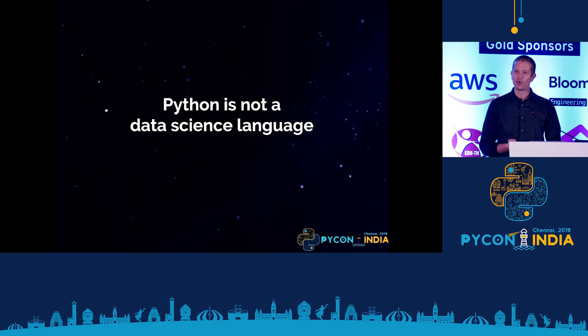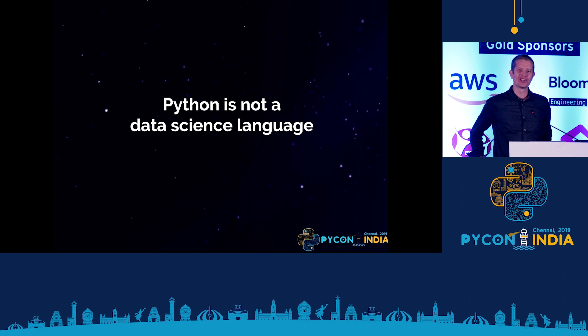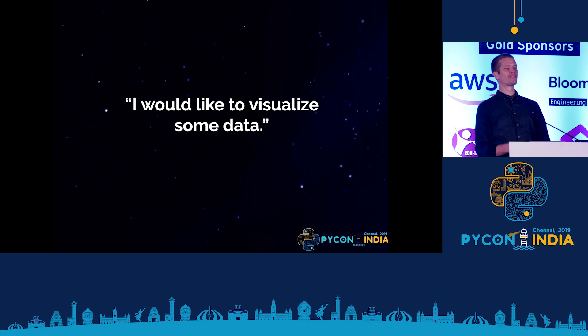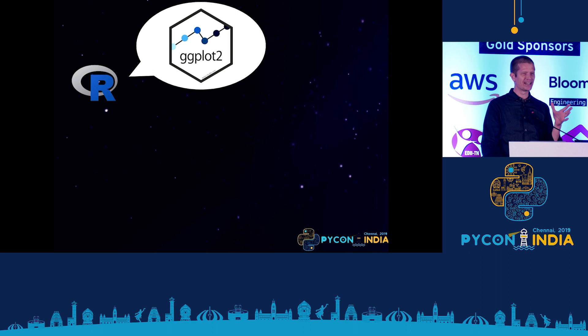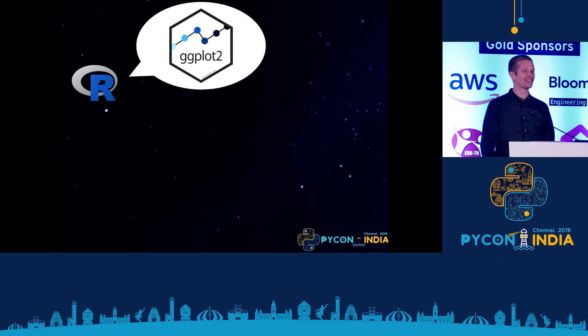Python has come a long way to where it is now as a data science language. Python was not designed to be a data science language, and you see vestiges of this when you approach Python asking data science questions. For example, if you say you want to visualise some data — if you ask someone from the R community, they'll say you visualise data with ggplot. It's a phenomenal tool for data analysis, data visualisation, and data science.